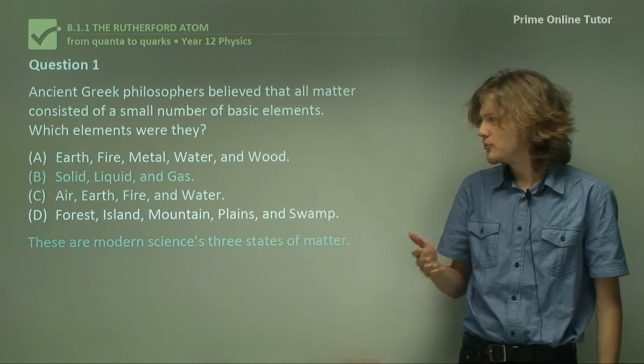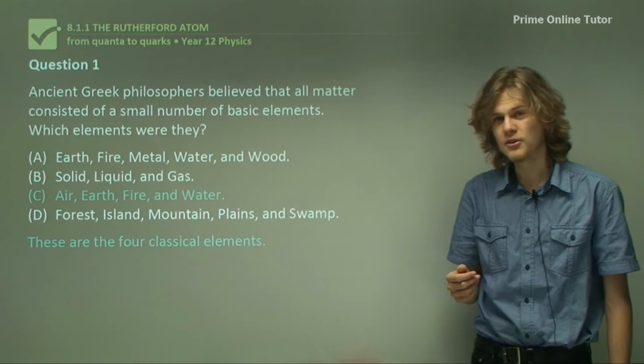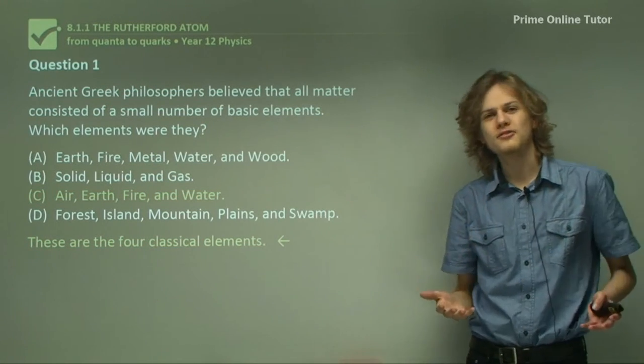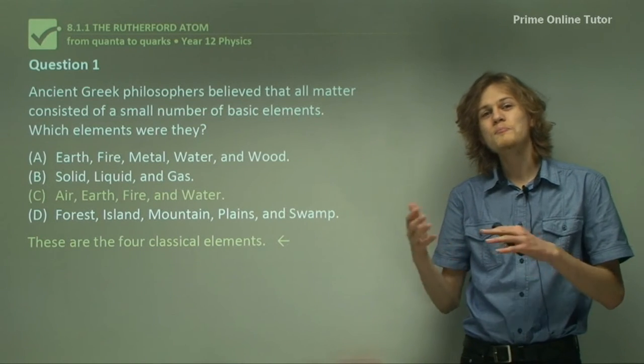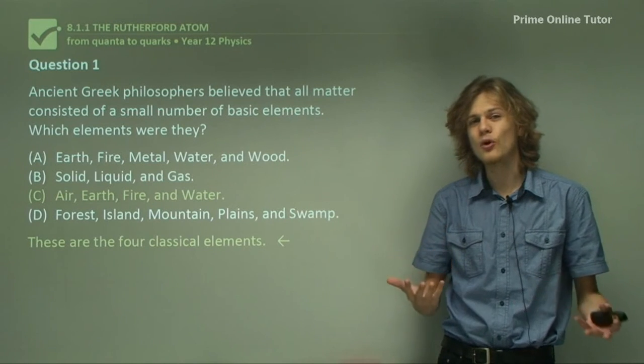In fact, the correct Greek elements are option C: air, earth, fire, and water. And these are the four classical elements. Using these, just like using our states of matter, the ancient Greeks could describe many different forms of matter by saying that they consisted of various parts of these four elements.